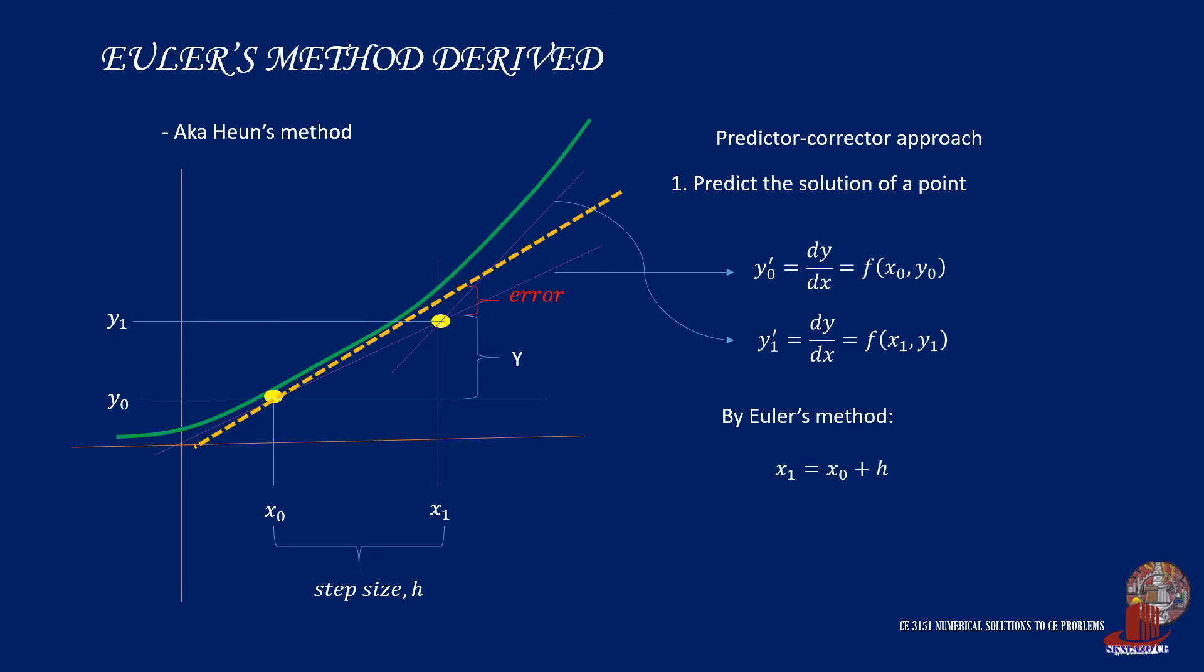Also, recall Euler's method formula for x1, which is x0 plus h, and y1 as y0 plus h times the function of the initial point.